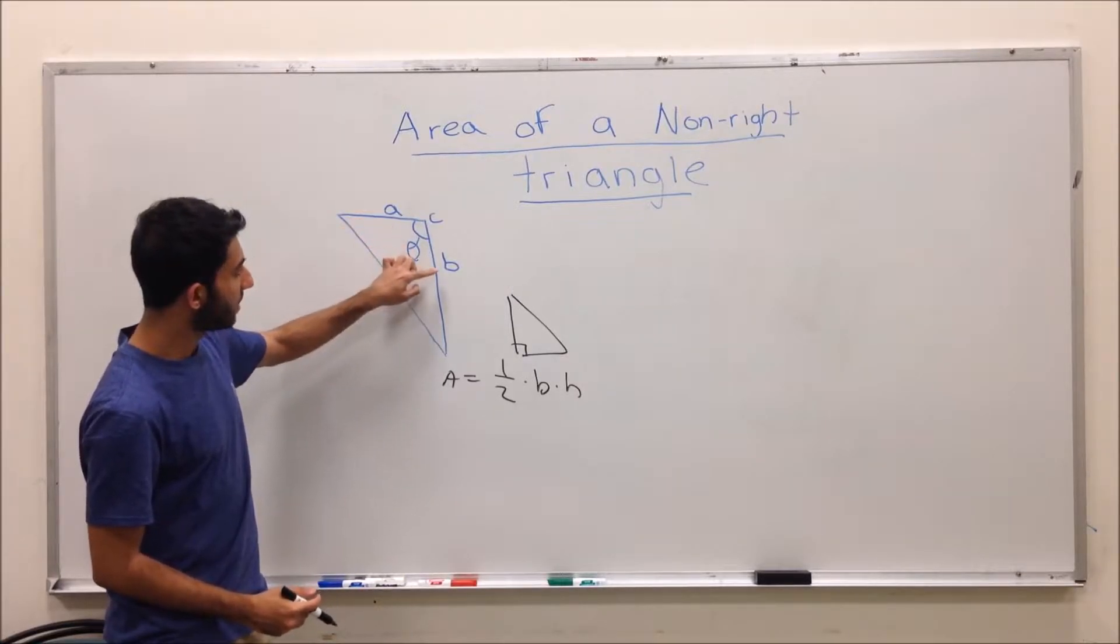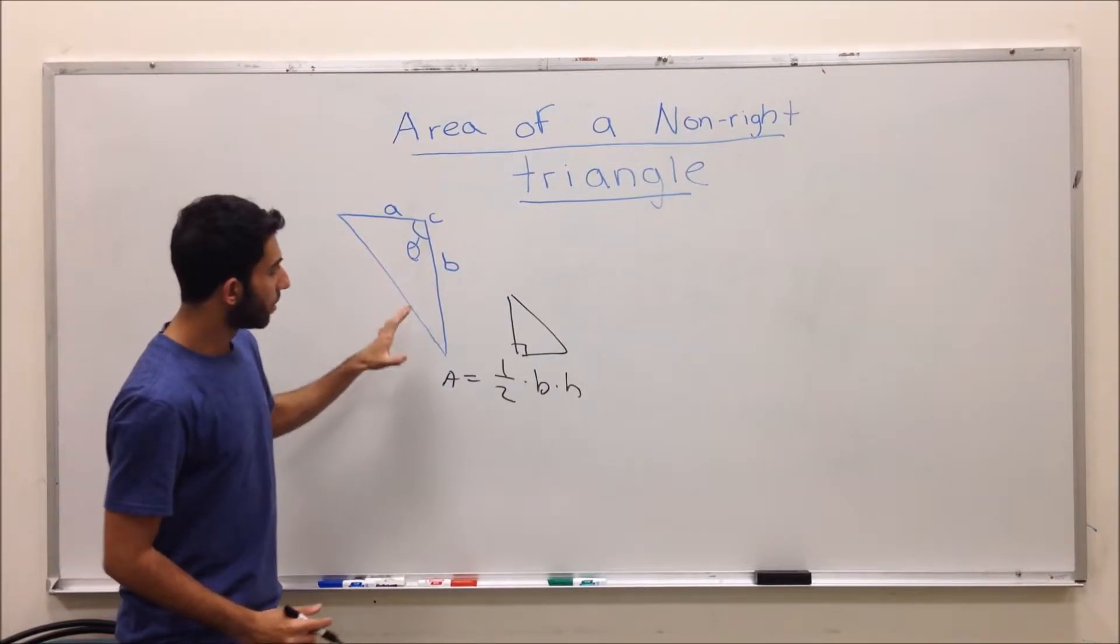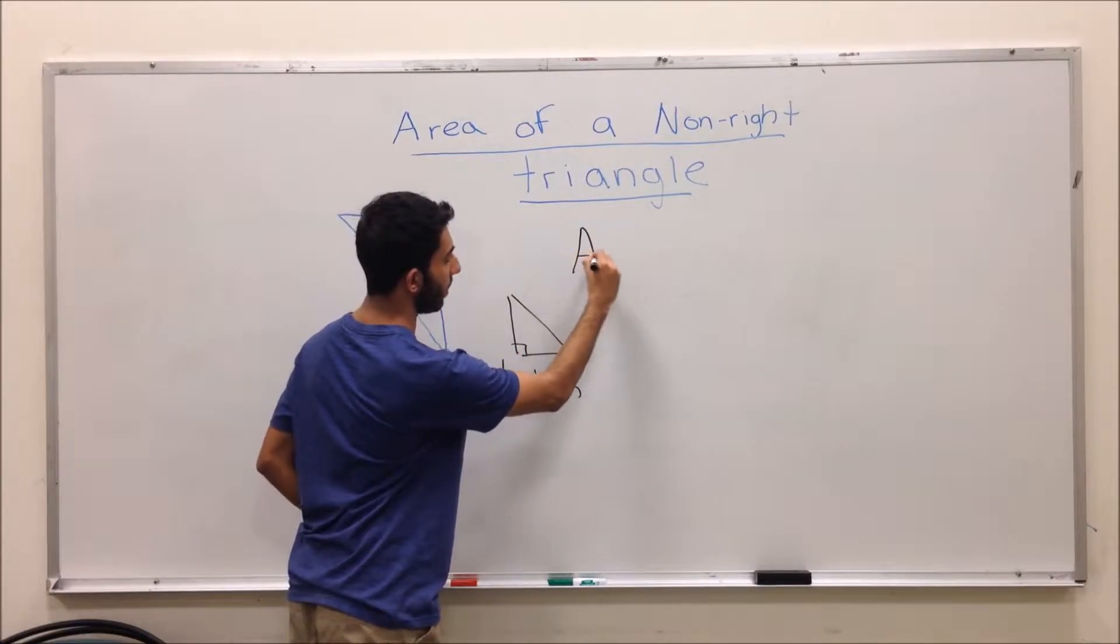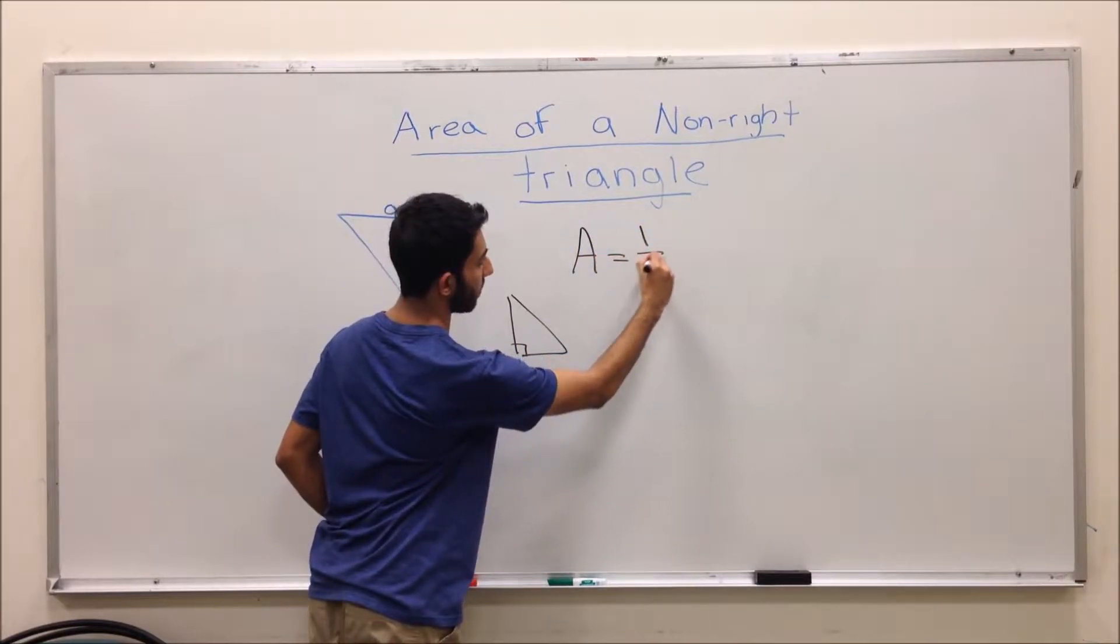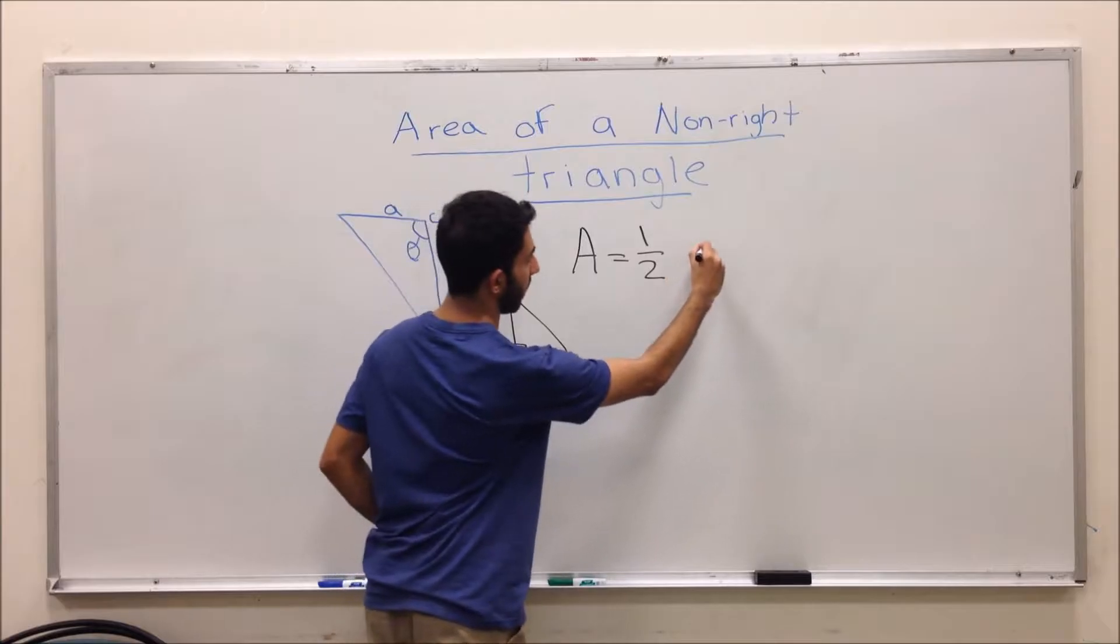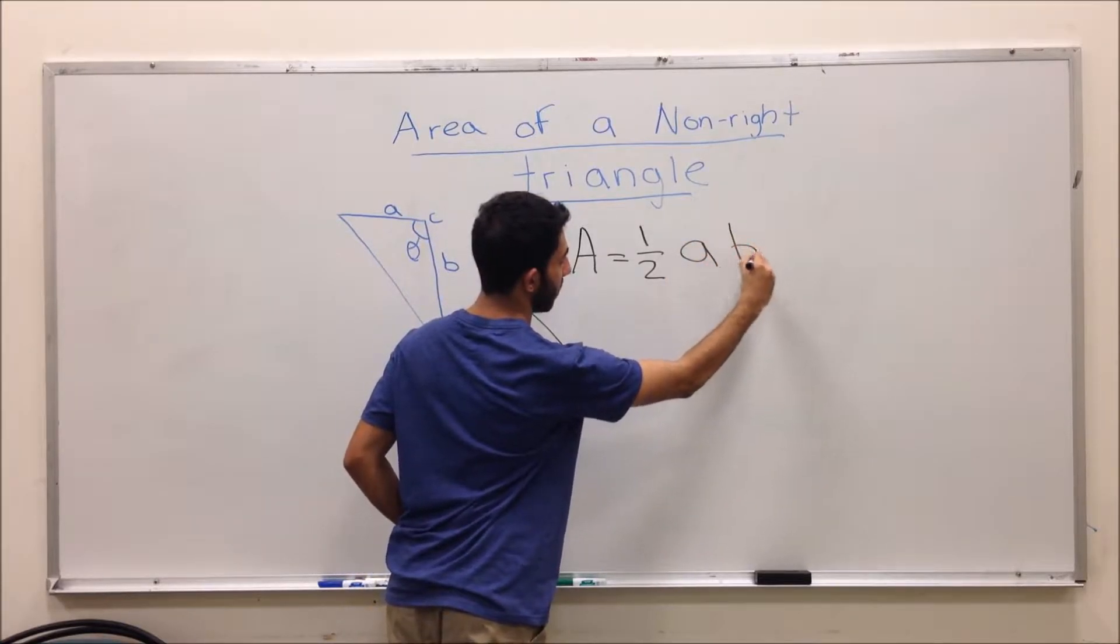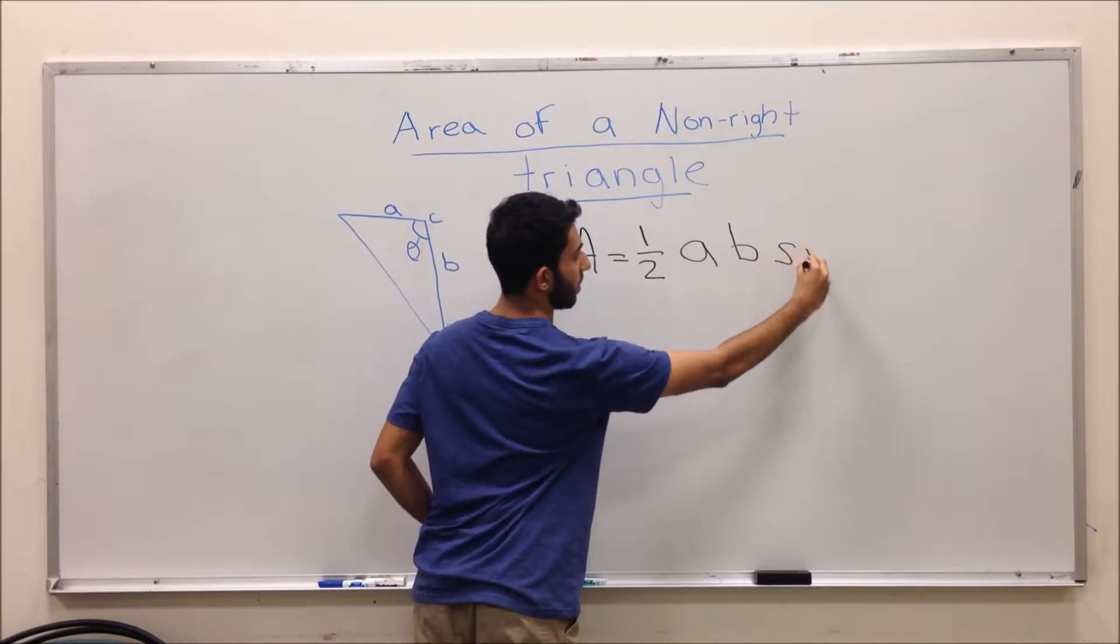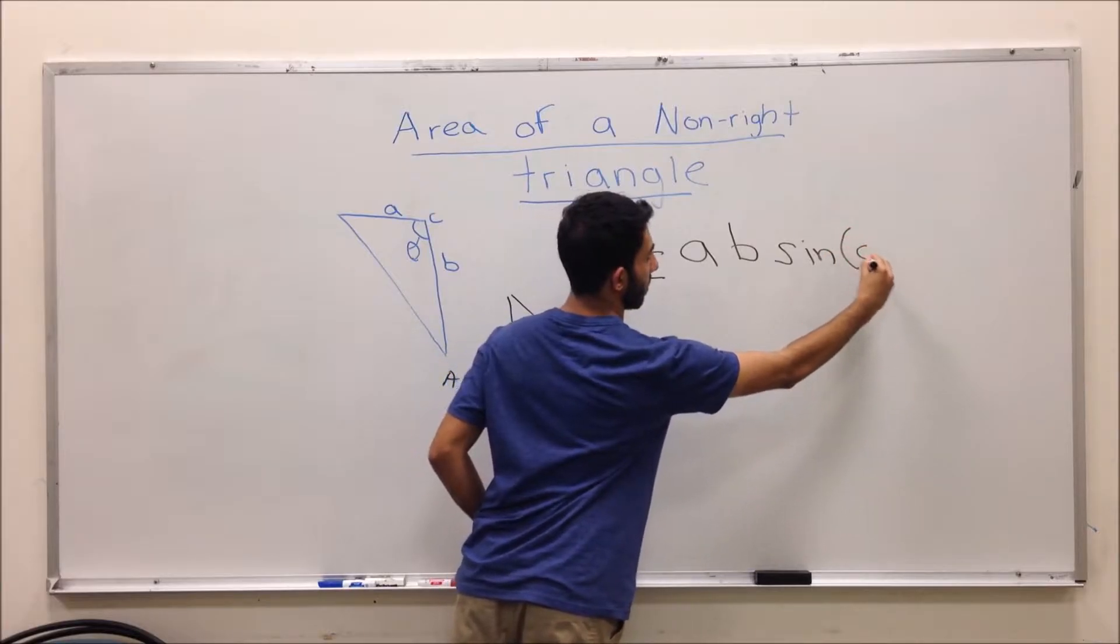For example, you are given two sides and one angle. The formula that you are supposed to use is area equals one-half a b sine c.